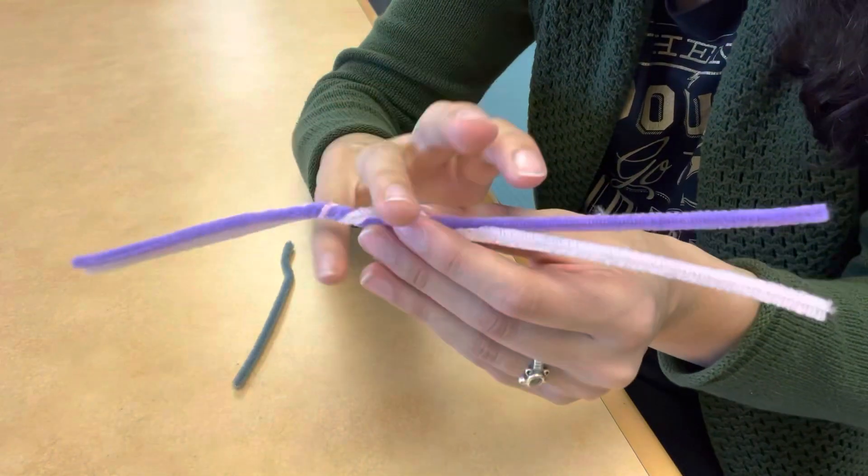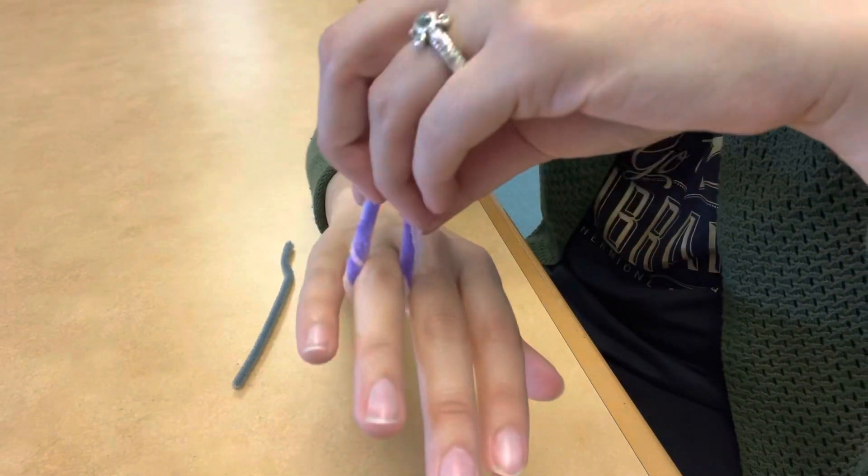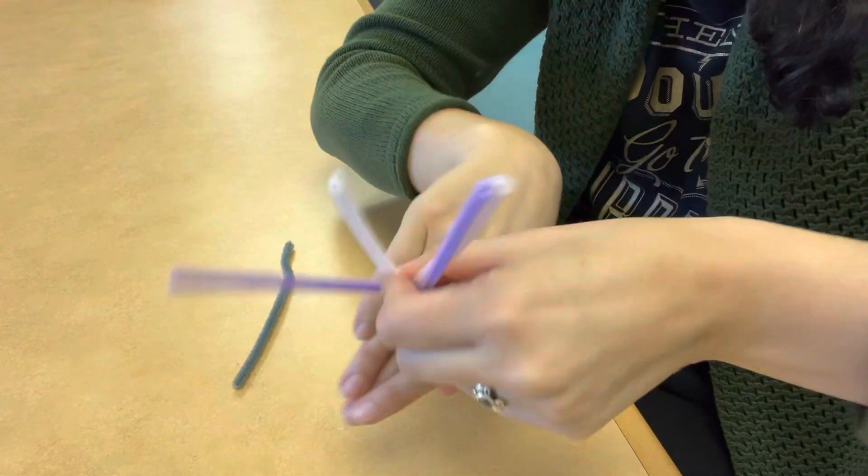And then you're going to put it around your finger. You're just going to measure it just like this. Leave a little space and then twist it just like this.